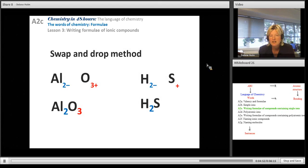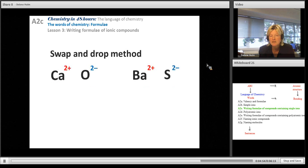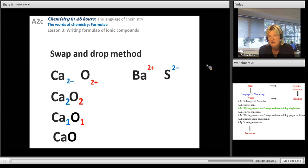Here are some more. I've done it in a little bit more detail because we always have to have the simplest ratio. So Ca2O2 is incorrect. You have to simplify it down to 1:1, and that gives you CaO. I've done the same thing with this. It comes to exactly the same barium sulfide as BaS.